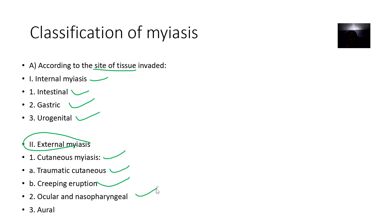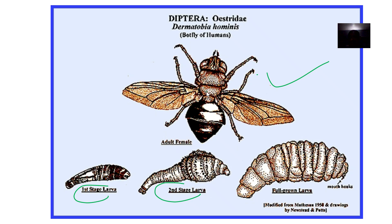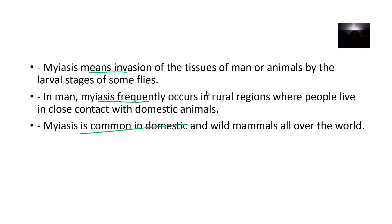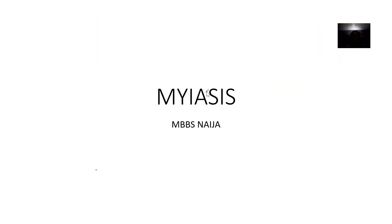You can also have ocular or nasopharyngeal myiasis — involving the eyes or nose — and aural myiasis. You can also classify myiasis based on the biological habits of the fly: whether it is specific, semi-specific, or accidental myiasis. Different types of myiasis will be covered in separate videos.